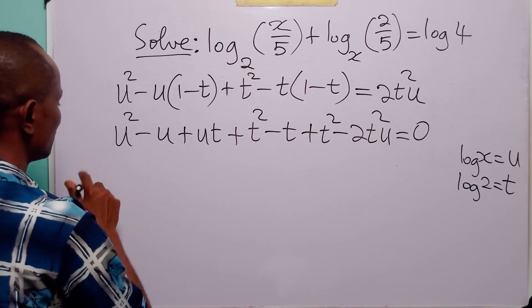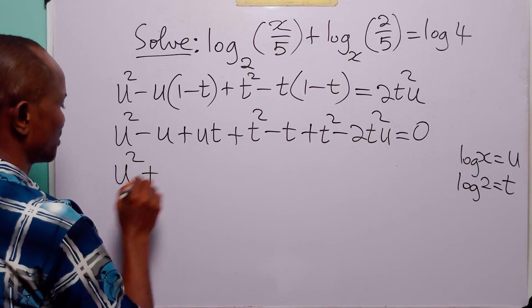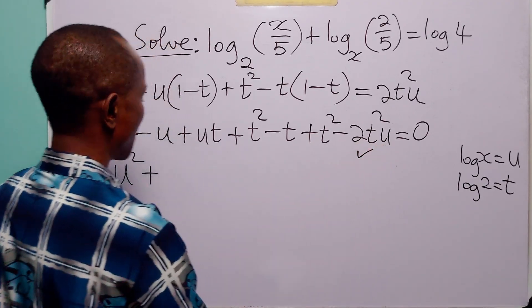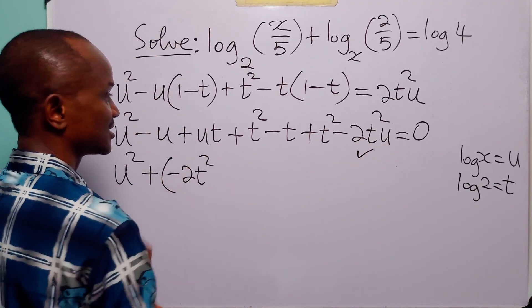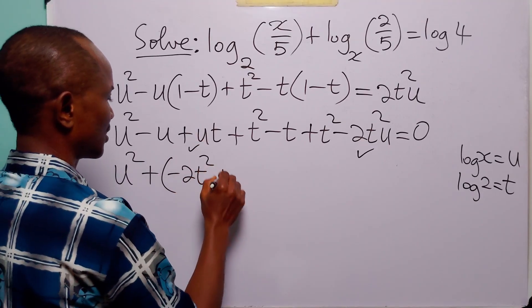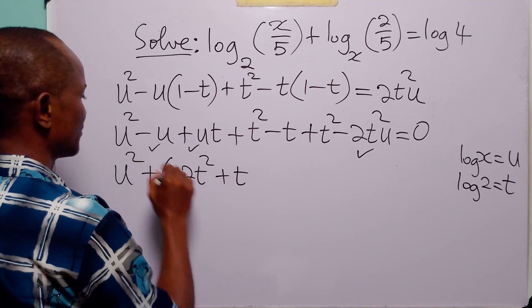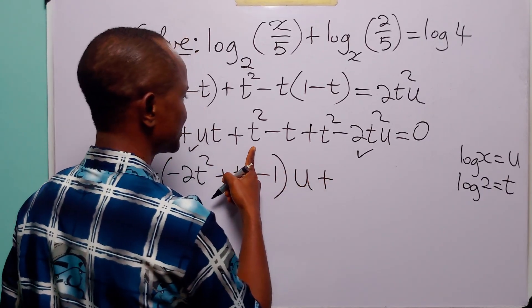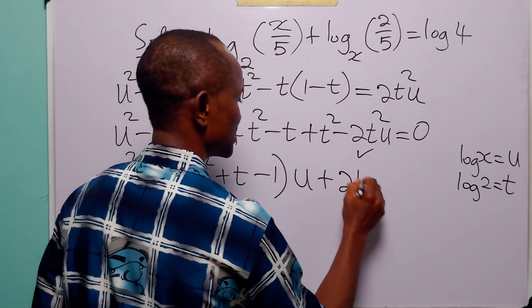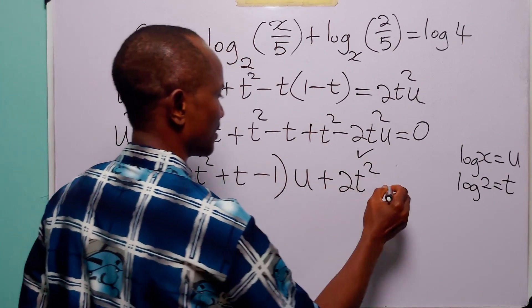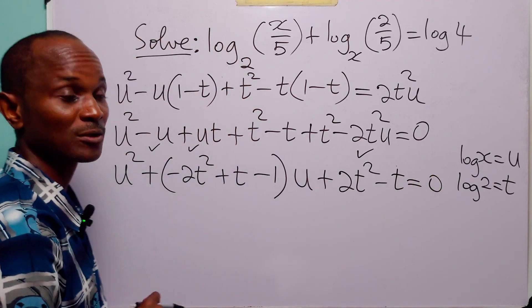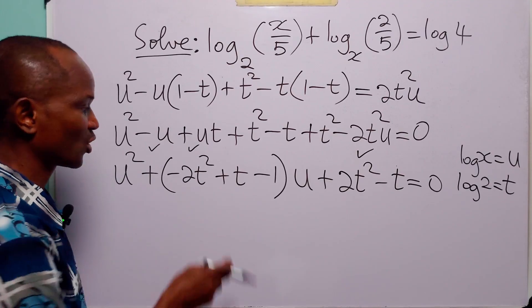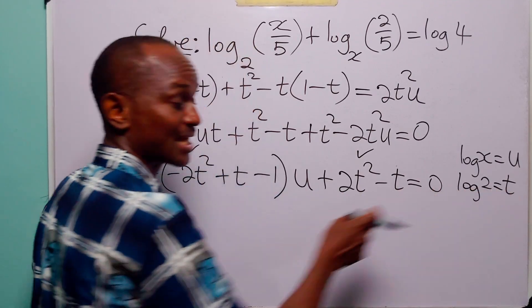Tidying the left-hand side: we have u², then collecting all coefficients of u we get (minus 2t² plus t minus 1), then the constant terms t² plus t² give 2t² minus t, and everything equals zero. Notice that this is a quadratic equation in u, since t (which equals log 2) is a constant.